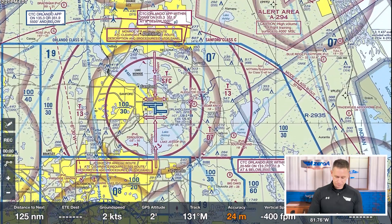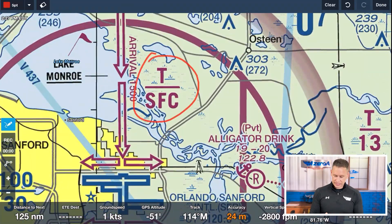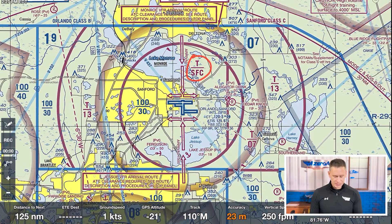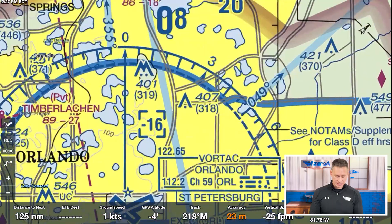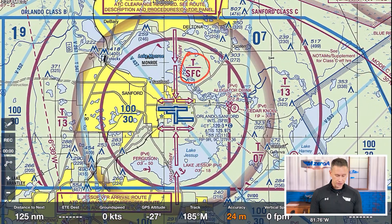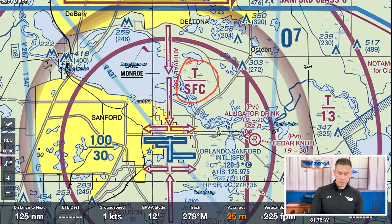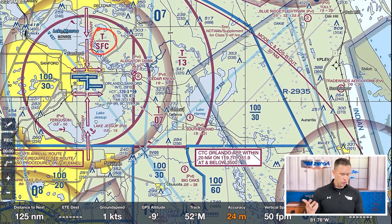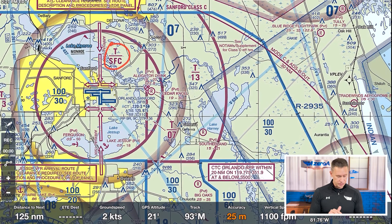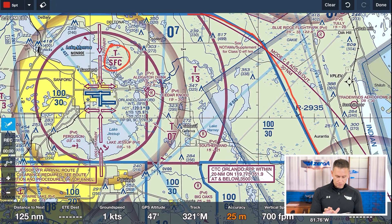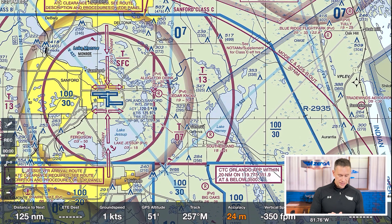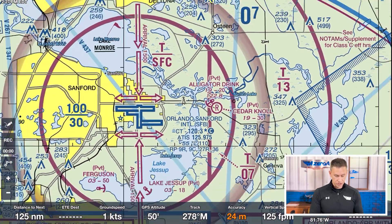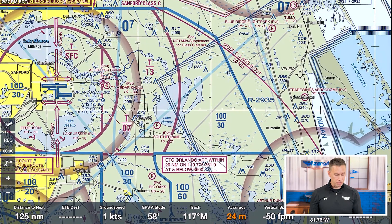Here's another example of a similar thing. What on earth is happening in this Charlie airspace where it says surface to T? What does that mean? Well, it means essentially the same thing as our minus 16. How I remember this is: this Charlie goes from the surface to the T — its top is the bottom of the Bravo. Most Charlies want to go up to 4,000 or 4,500 feet, but if we follow this Bravo all the way around, we can see how this Bravo over here starts at 3,000 feet. So at 2,999 feet, you're in this Charlie. At 3,000 feet, you're in this Bravo. Does that make sense?